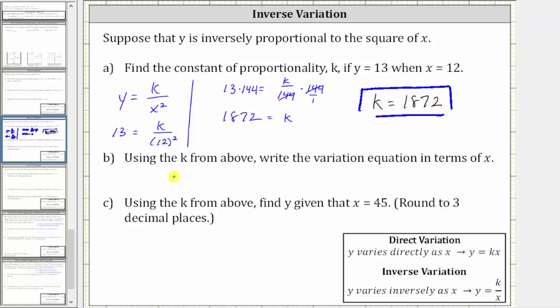And finally, for part b, using the k from above, write the variation equation in terms of x. Our inverse variation equation is y equals k divided by x squared, but now we know k is 1,872. Therefore, our specific equation for the situation is y equals 1,872 divided by x squared.